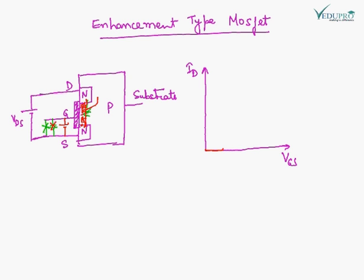As soon as there is the channel formed here and a continuous path is available for the current, the ID will start flowing in the MOSFET. So the voltage at which this current starts flowing is known as VT threshold voltage.